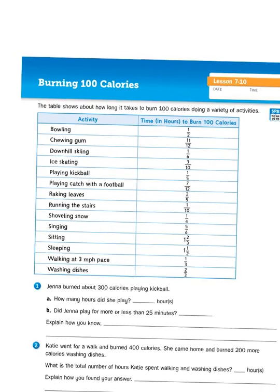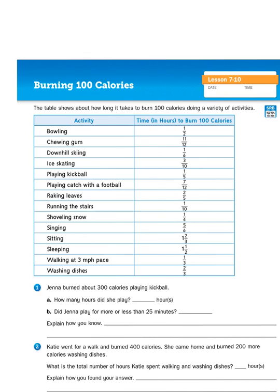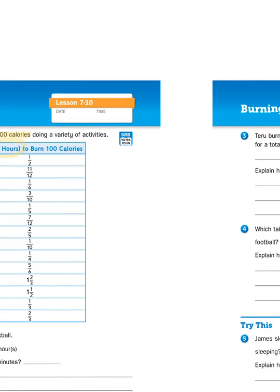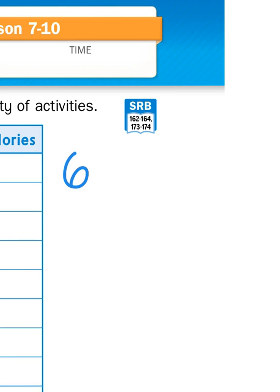Burning 100 calories. The table shows about how long it would take to burn 100 calories doing a variety of activities. We see all the amounts of time are in hours, but they're all represented in fractions. Before we get any farther into this, I want to remind you that there are 60 minutes in one hour. That's going to be useful information later on.